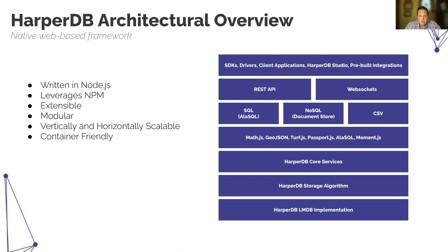HarperDB's architecture naturally fits containerization paradigms. Requirements are simple: Linux, a file system, Node.js, and common dependencies. The application is completely abstracted from the data — all user and configuration data is stored in a single directory on persistent storage. Because the application is separate, you can spin it up and down as necessary. Unlike traditional databases, HarperDB has no special infrastructure requirements.